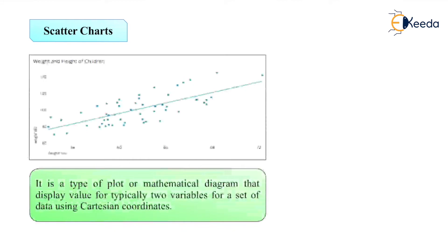Next is scatter chart. That is a new chart you are seeing I guess. This is a scatter chart. Through that we can explain how many data are scattered with each other from the center. It is a type of plot or mathematical diagram that displays the value for typically two variables for a set of data using a Cartesian coordinate. This is my coordinates and I will show how much each and every data are scattered from each other.